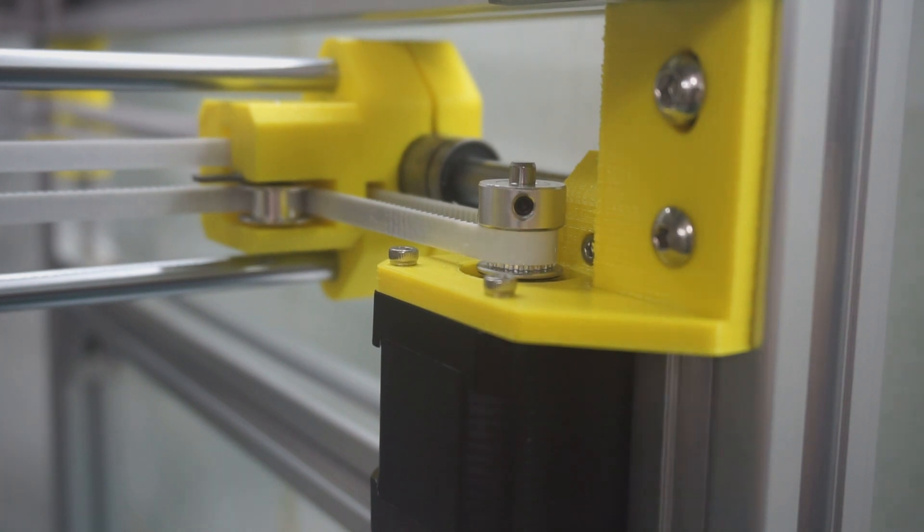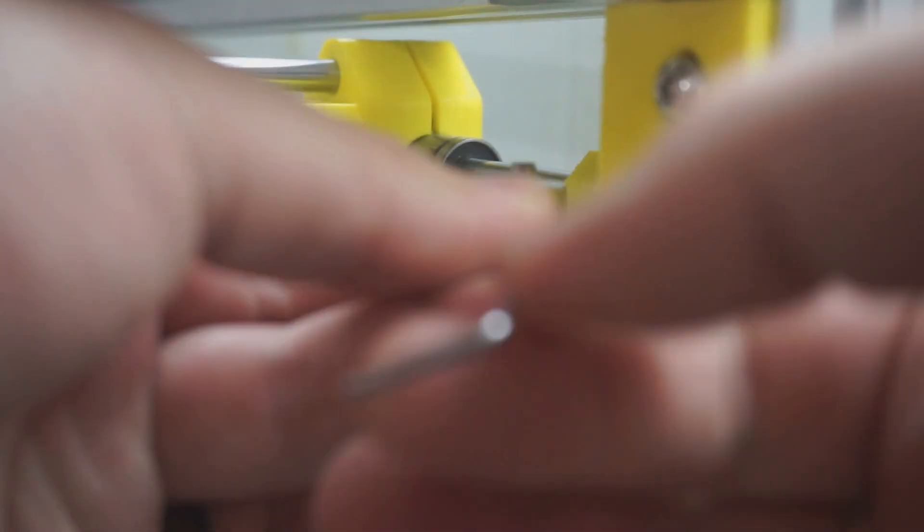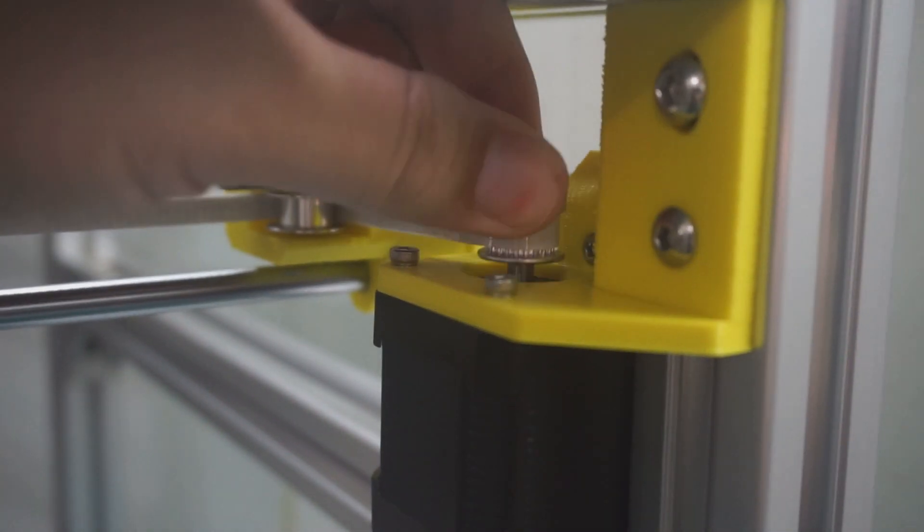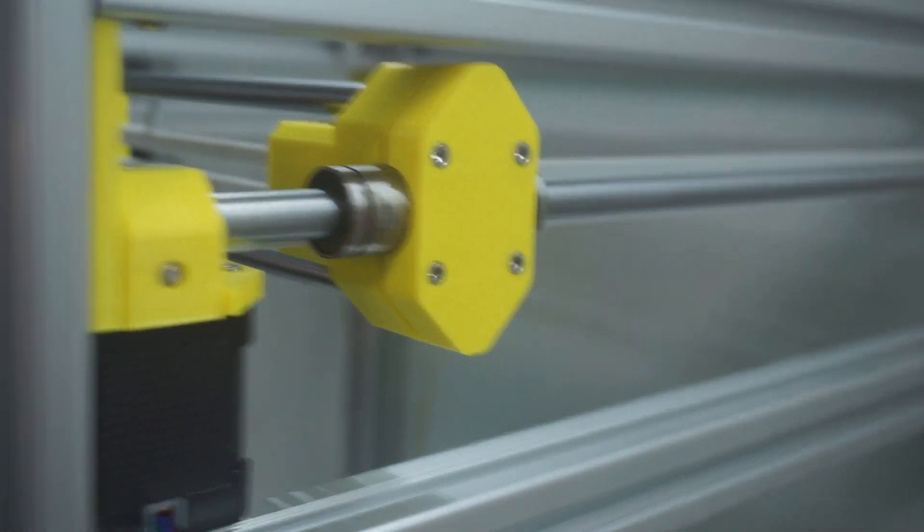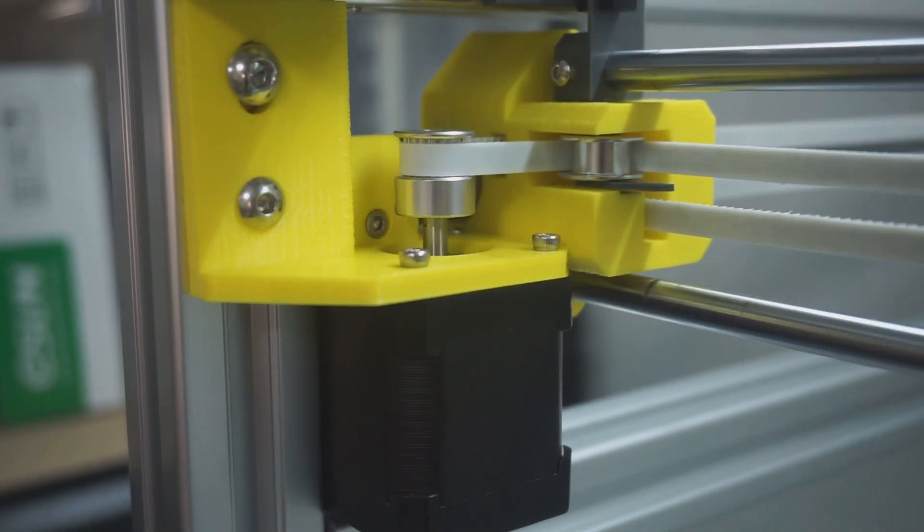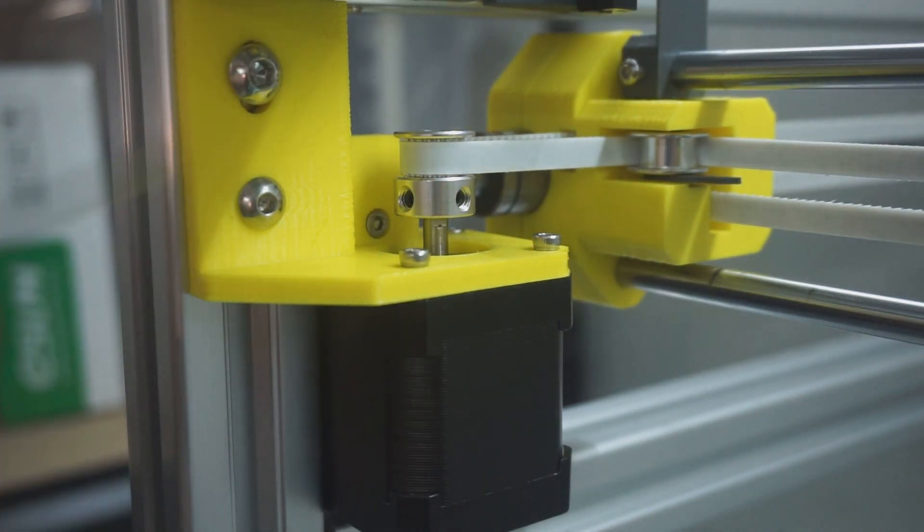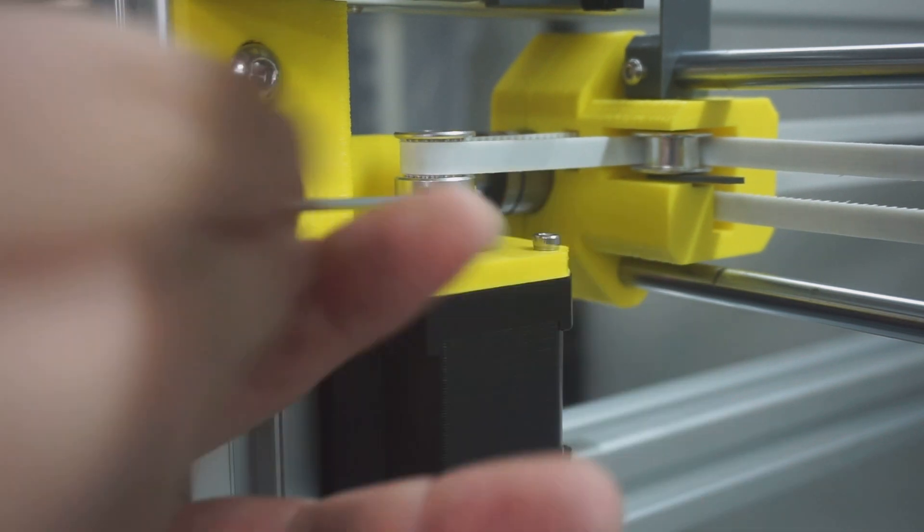Next we want to make sure the belts and the pulleys attached to the stepper motors are nice and lined up. Easiest way to do this is to undo the grub screws. Then pull the X gantry away and back to the stepper motors, and this will self-center the pulley on the shaft.